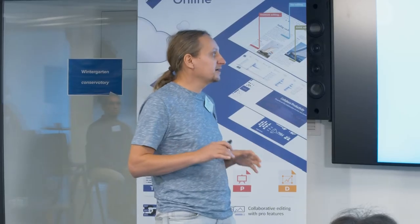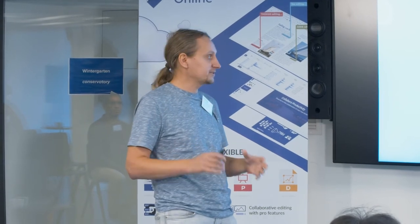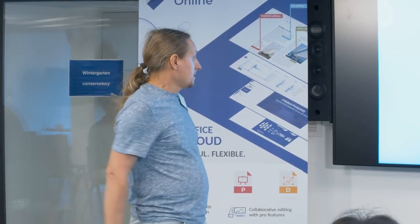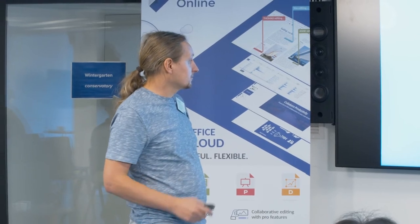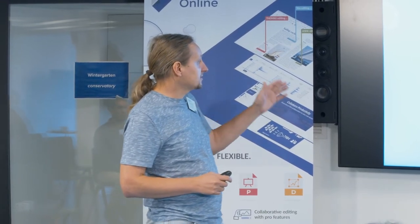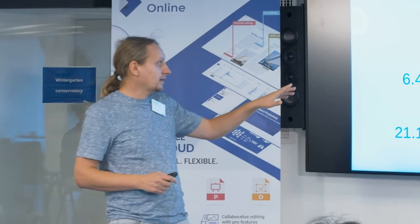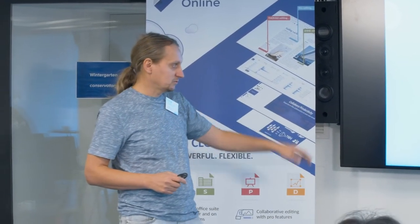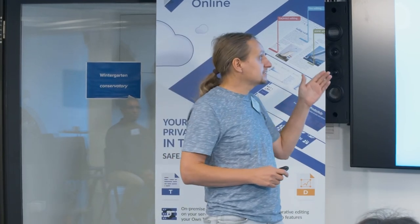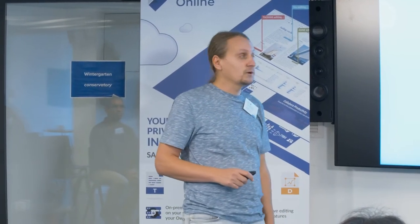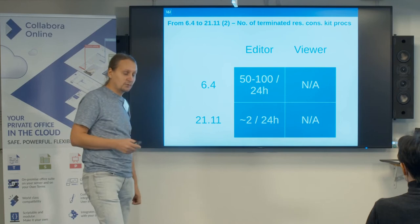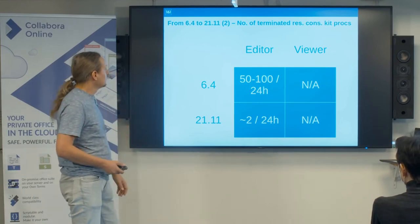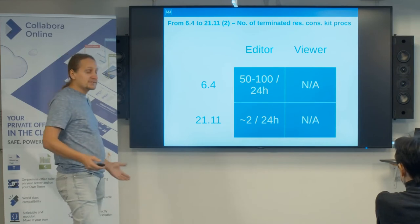We also clean up resource-consuming kit processes — these are processes that are not lost, they are handled by cool WSD, but they consume many resources. In version 6.4 we had between 50 and 100 in 24 hours; in 21.11 we have approximately two. In the viewer this metric is not available because of the way it was implemented — it takes into account the idle state of the document, which doesn't make sense for the viewer.